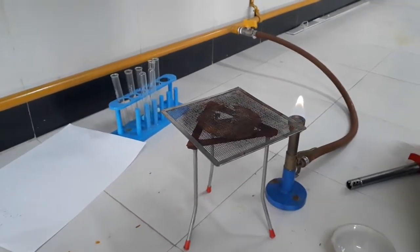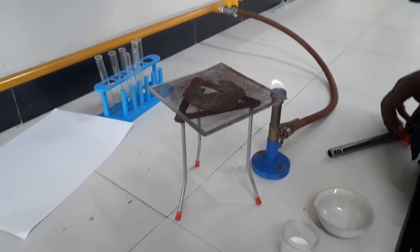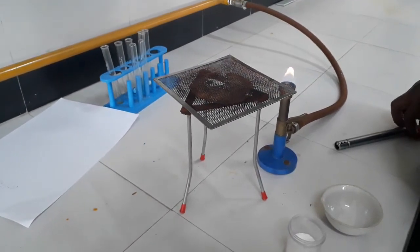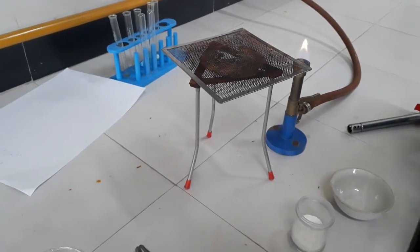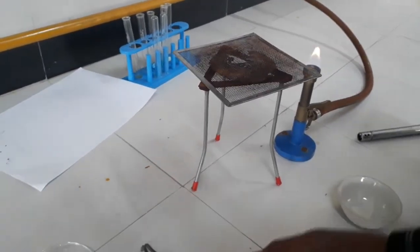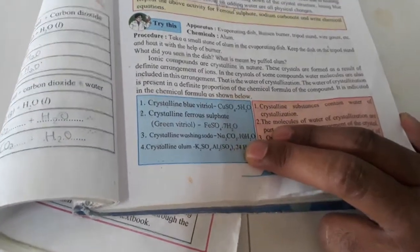Good morning students, we have discussed water of crystallization in the previous video. Today we will see water of crystallization of alum. The alum formula is given in your textbook. Here you can see it is K2SO4.Al2(SO4)3.24H2O.